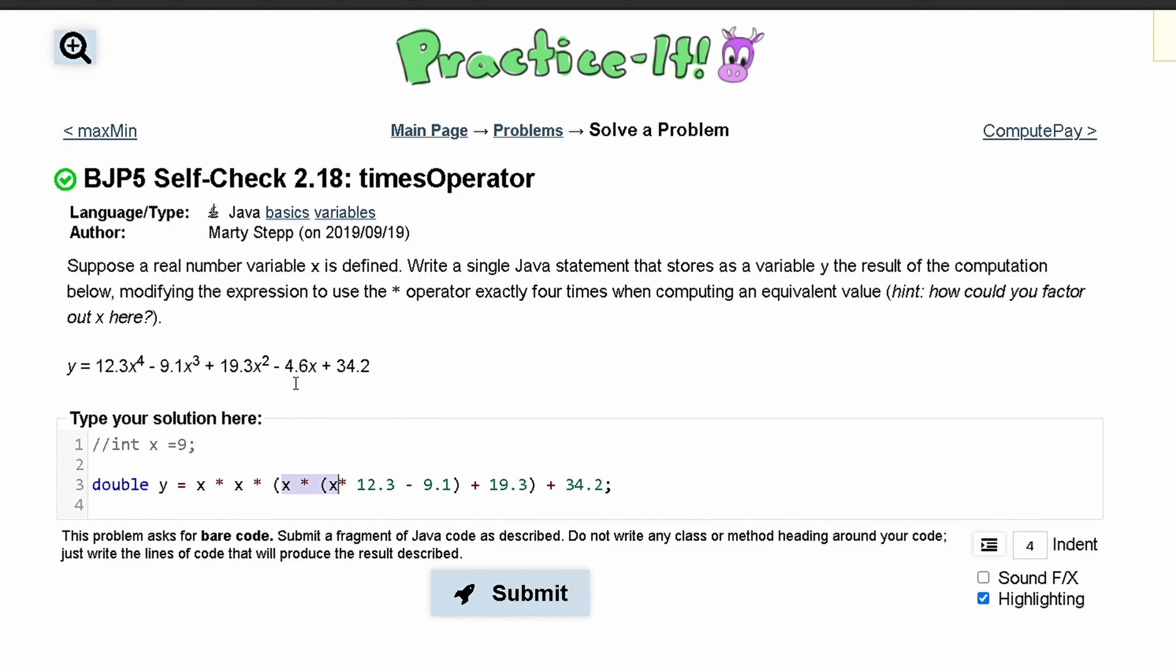Lastly we have negative 4.6x. So we can do the same thing where we surround this with parentheses and then just subtract 4.6 like this. From here our x only goes factoring into the negative 4.6 once.